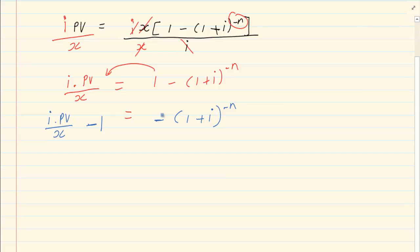Remember that when you are doing this you would be having values for i, PV, and x. When you take your negative over you would have negative [in brackets] is equal to (1 plus i) to the power of negative n.